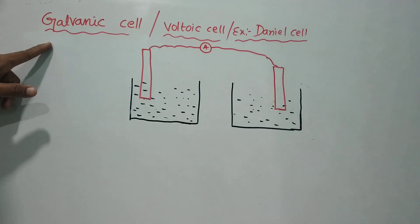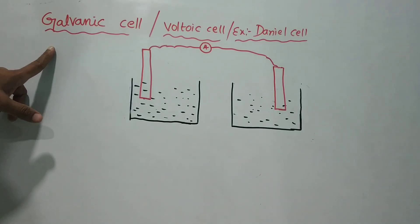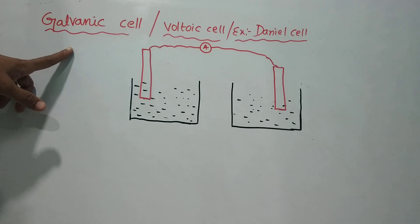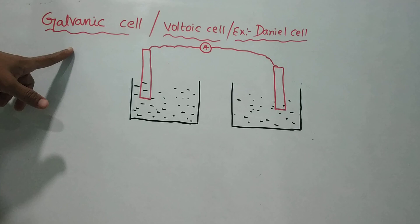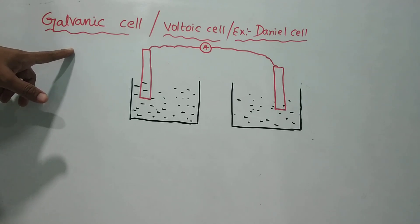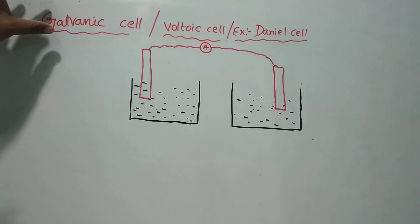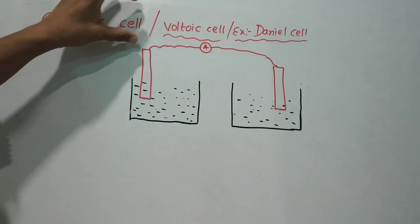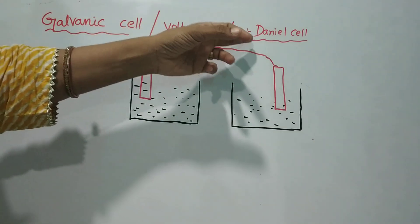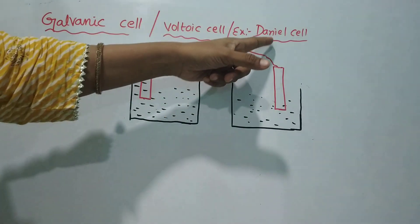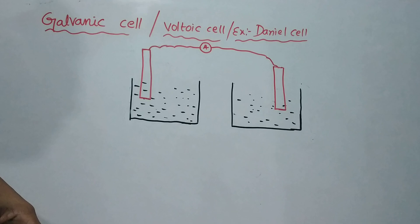Hello everyone, welcome to Chemistry Dixuji. Last class, we covered the Introduction of Electrochemistry Part 1. We covered Spontaneous Reactions and Non-Spontaneous Reactions. The types of Electrochemical Cells include Electrolytic Cells, Galvanic Cells, and Voltaic Cells. We will now look at an example of a Daniel Cell, specifically the Zinc-Copper example.